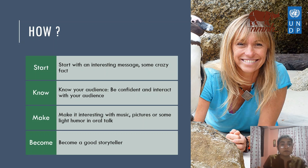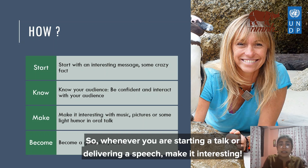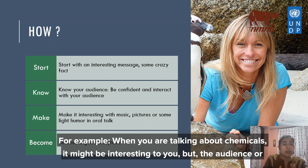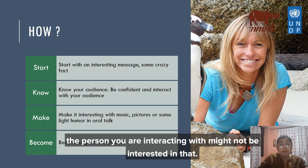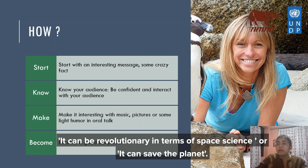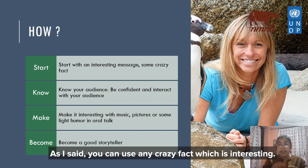How to communicate? Whenever you are starting to talk or delivering a speech, make it interesting — with a very interesting message or some crazy fact. For example, you are talking about chemicals, but the audience might not be interested. So you can start with something like: this chemical could be a game changer for rocket science, or it can save the planet — any crazy fact that is very, very interesting.